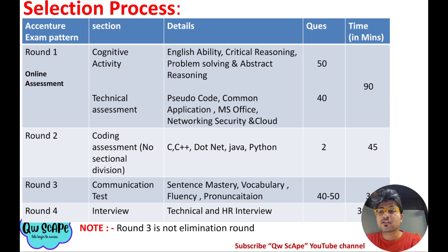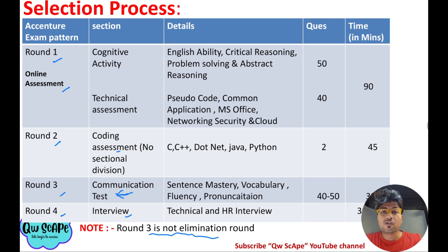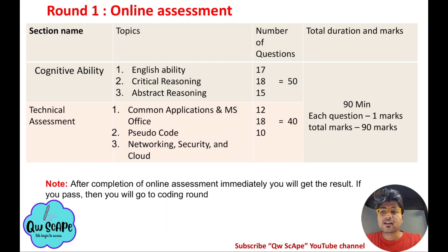Let's talk about the selection process. There will be 4 rounds: Round 1 is the online assessment, Round 2 is the coding assessment, Round 3 is the communication test, and Round 4 is the interview. Round 3, the communication assessment, is not an elimination round.